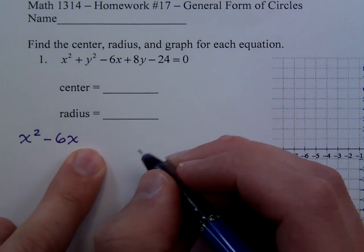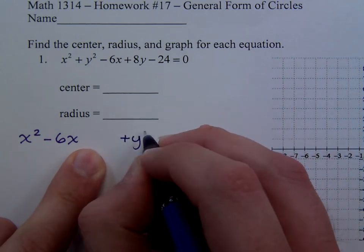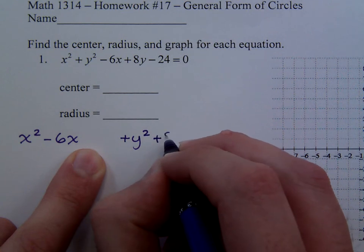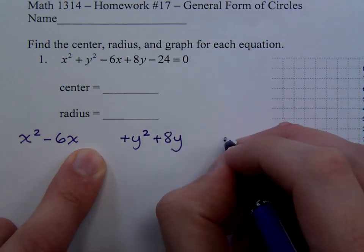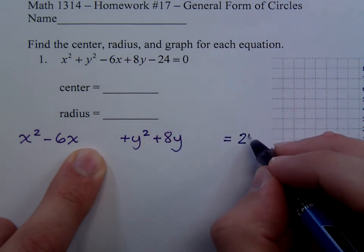Leave some space, and then we have plus y squared plus 8y, and then you want to move the constant here to the other side, so that's a positive 24.